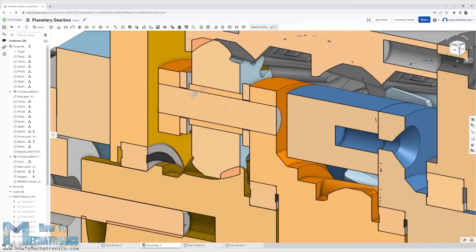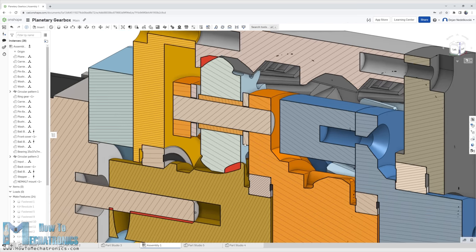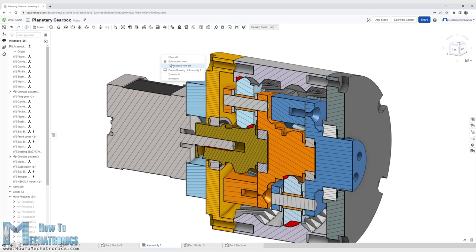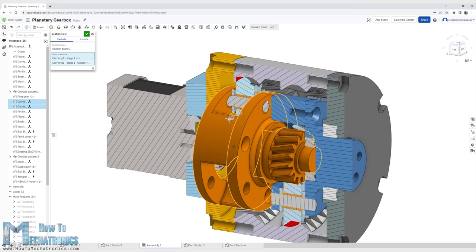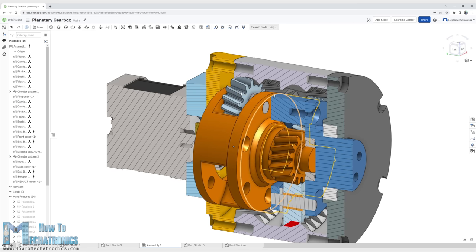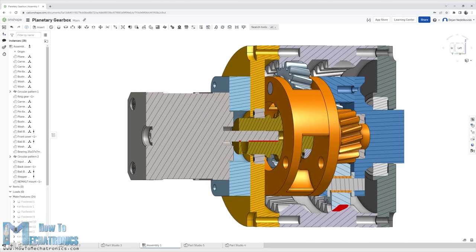I had some 6mm shafts with 22mm length. I used them for the planet gears in combination with some bushings. As for the planet carrier, I designed it to support the shafts on both sides, which made it a little bit bulky, but that will provide better performance.